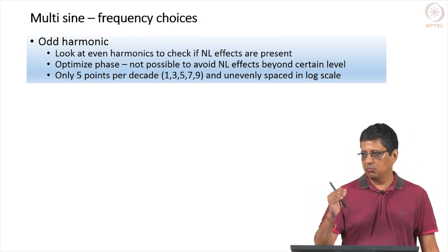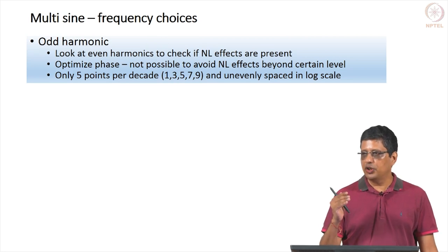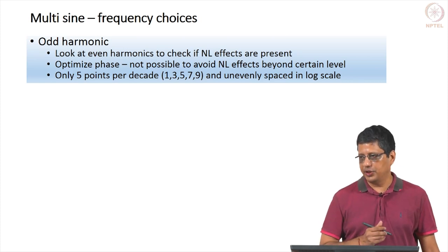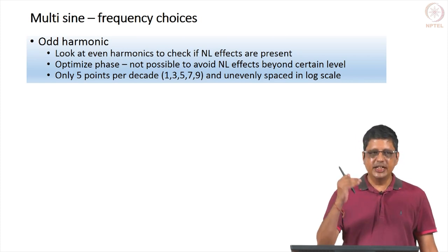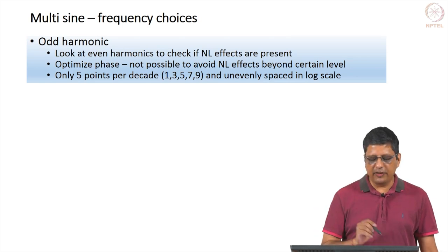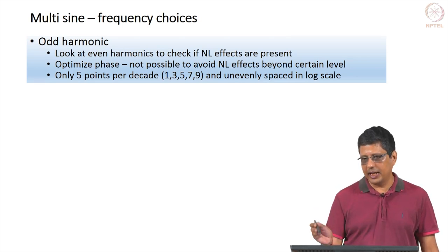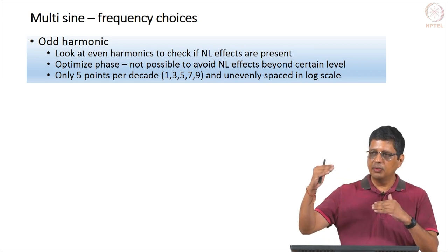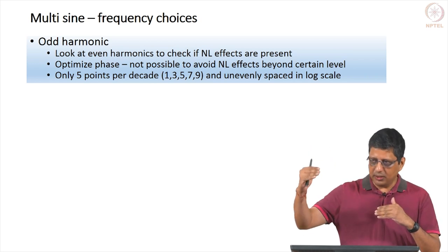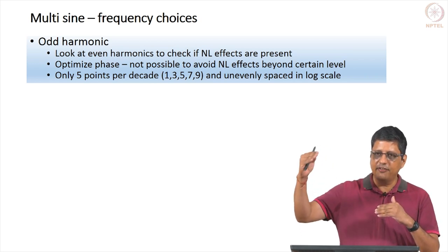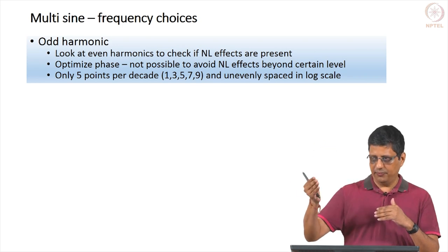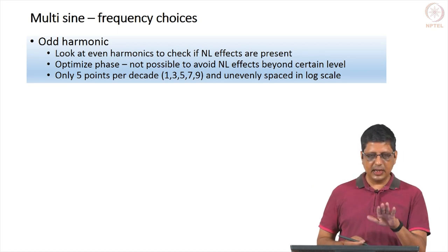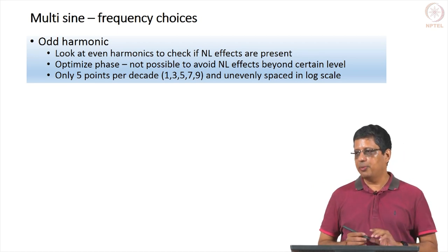There is another problem: each decade — meaning 1 to 10, 10 to 100 — you have only 5 choices with odd harmonics: 1, 3, 5, 7, 9. You can take 0.1, 0.3, 0.5, 0.7, 0.9, then start again at 1, 3, 5, 7, 9, and continue to 10, 30, 50, 70, 90, and so on. Because you choose odd harmonics, you only have 5 points per decade. If you also apply even harmonics, you cannot tell whether nonlinear effects are present.